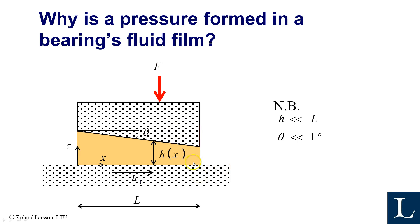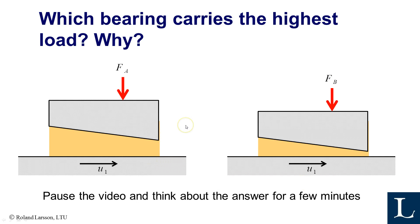We assume a bearing that has some inclination — we're coming back to why, but it is definitely required. We assume that we apply a load that the oil film should support, and we assume that the lower flat surface is moving with a speed u1. You may sit back and think about this: we have two cases, one with a little bit thicker film than the other, and the same speed in both cases, but probably different load carrying capacity. Which one will carry more load, and why? Stop the video for a while and think about the answer.